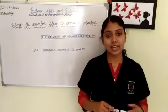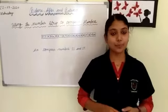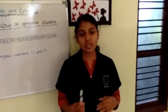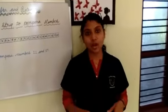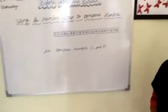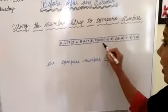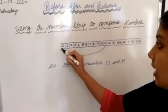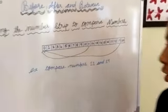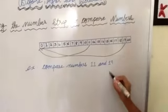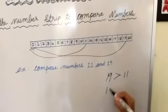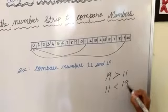Let us use the number strip to compare numbers and see which number is greater and which is smaller. Compare numbers 11 and 19. Here 11 is nearer to 0 and 19 is farther from 0, which means 19 is greater than 11 and 11 is smaller than 19.